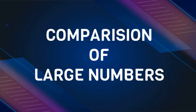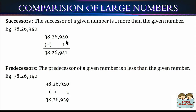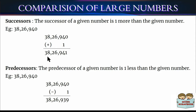Before comparing large numbers, let us learn about successors and predecessors. The successor of a given number is one more than the given number — that means we add one to the given number. For example, when we add one to 38,26,940, it gives the successor, which is 38,26,941.